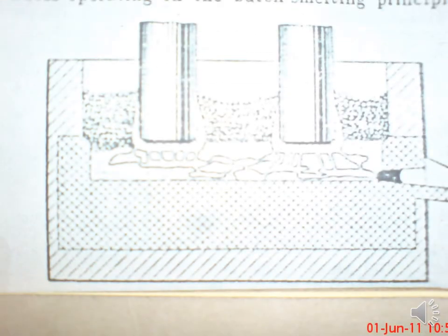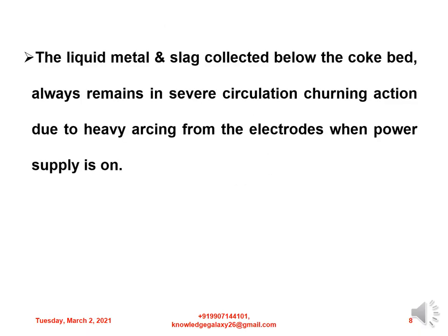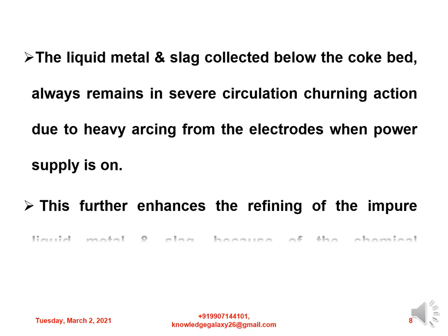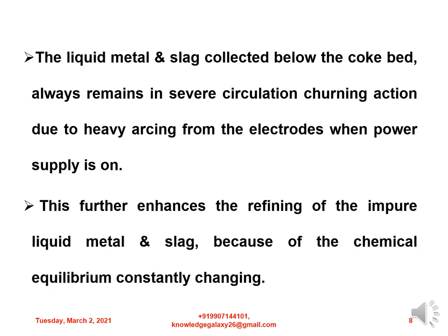This is a schematic representation of the liquid metal and slag trickling down below the arc zone of electrodes and below the coke bed. The liquid metal and slag collected below the coke bed always remain in severe circulation and churning action due to heavy arcing from the electrodes when power supply is on. This further enhances the refining of the impure liquid metal and slag because of constantly changing chemical equilibrium.